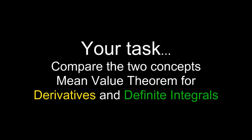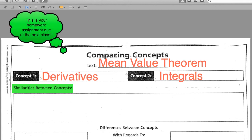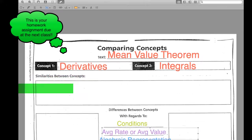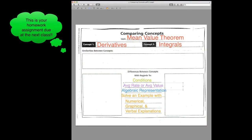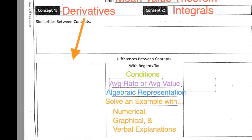Your task now is to compare the mean value theorem as to how it is applied to both derivatives and integrals. Similarities: first record all of the similarities in applying the mean value theorem to both derivatives and integrals. It is because of these similarities that we frequently confuse and misunderstand its application. I want more than two similarities recorded. Now differences: on the left column, you will record specific characteristics of the application of the mean value theorem to derivatives, and on the right column, you will record characteristics specific to definite integrals.